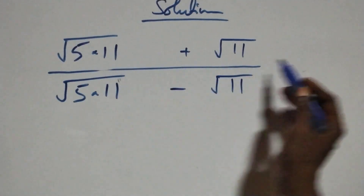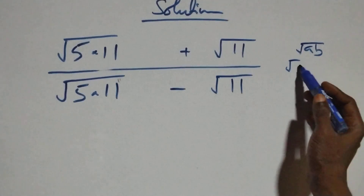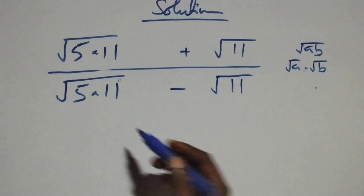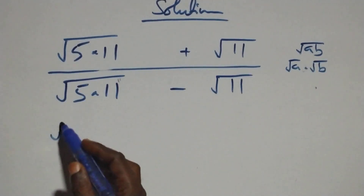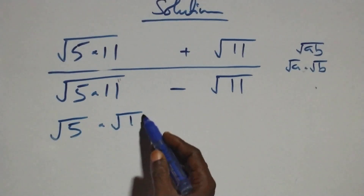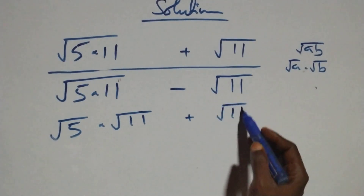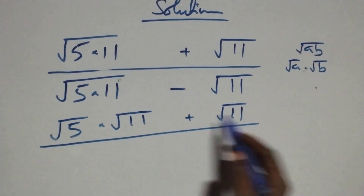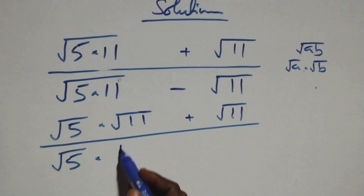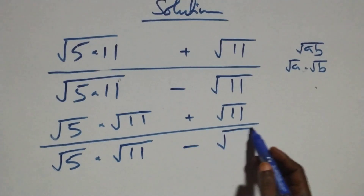This follows when we have root(a × b) which can be written as √a times √b. So what we have here becomes root five times root eleven, plus root eleven, then divided by root five times root eleven minus root eleven.